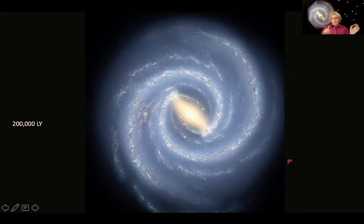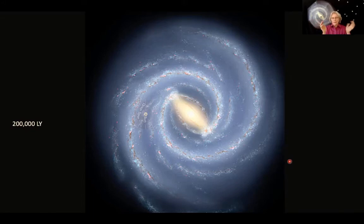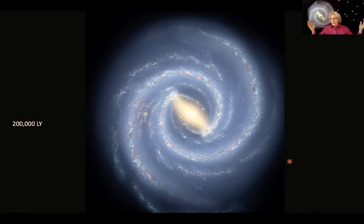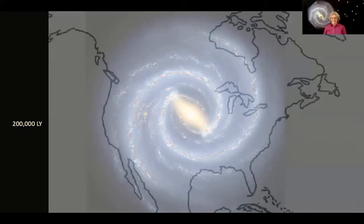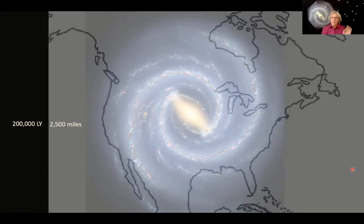So 200,000 light years — compared to this quarter representing the solar system — to make a true approximate scale, would the galaxy be bigger than a house? Bigger than a city? Maybe our galaxy would span North America on this model. If our solar system is the size of a quarter, our galaxy would span roughly 2,500 miles.